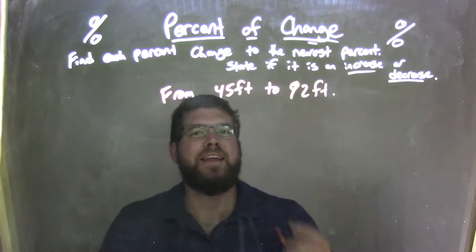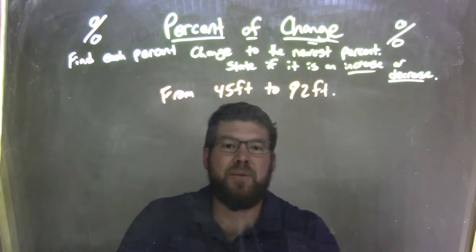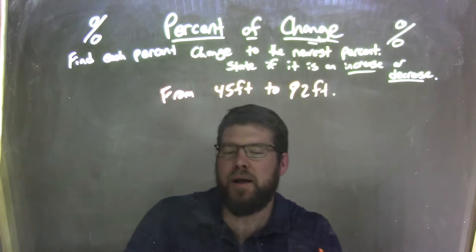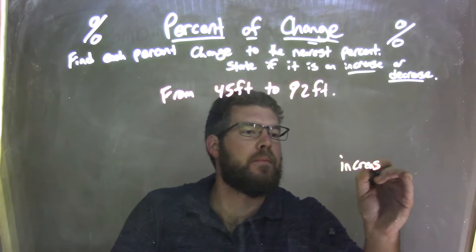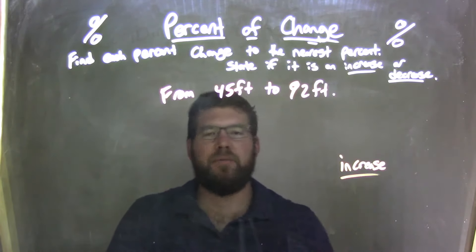Well, at first, is that an increase or decrease? We're going up, right? 45 to 92. 92 is larger, so that's an increase. So I got that down, I got that going for me.